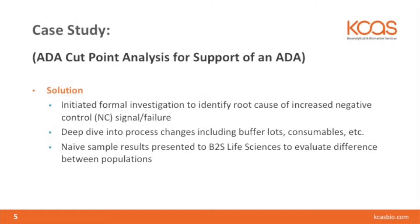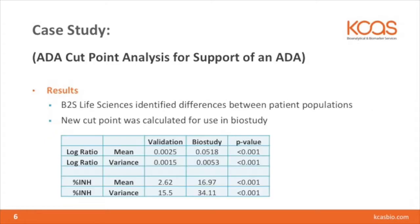This resulted in us establishing a new cut point for use in the biostudy. As you can see here, we have data showing the validation log ratio mean and variance, and then the biostudy, as well as the percent inhibition mean and variance. As you can see, there's a wide degree of difference between the two, and this was what led us to reestablishing the cut point for the biostudy.